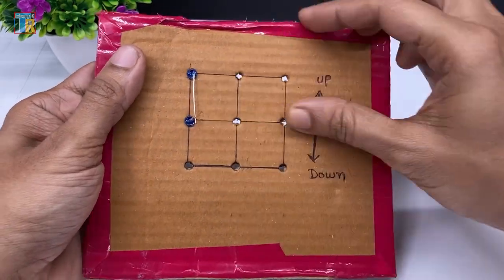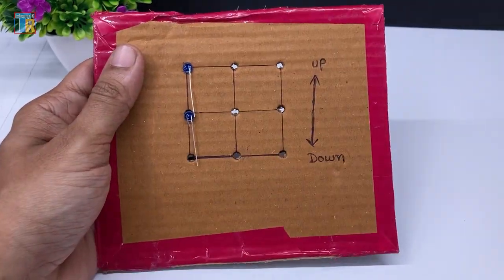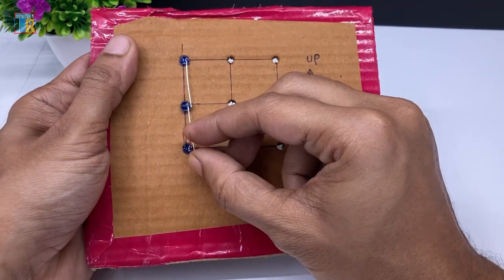Repeat the same process for all LEDs. Bend the negative pin downwards.